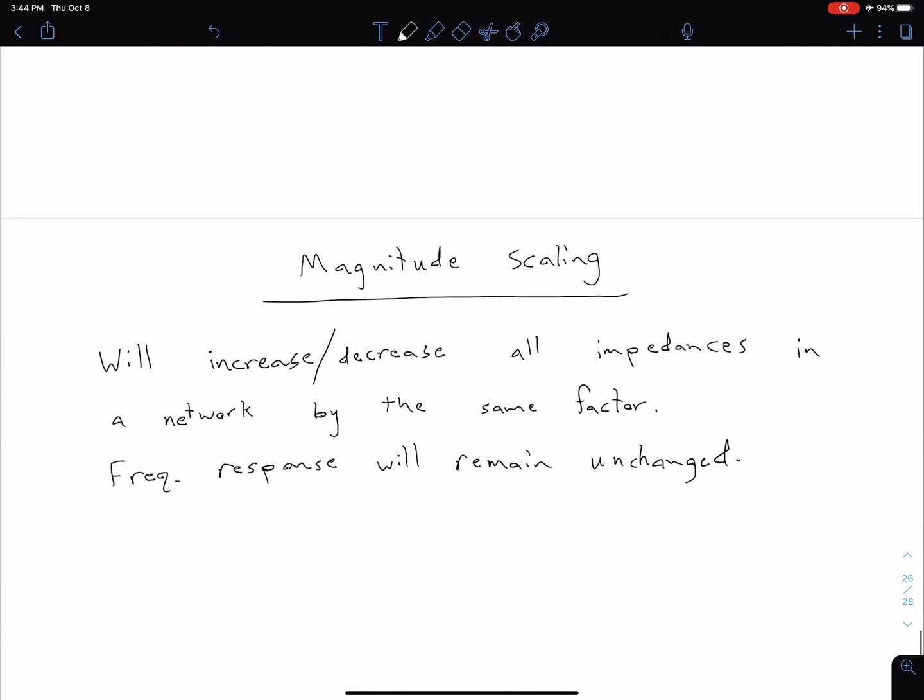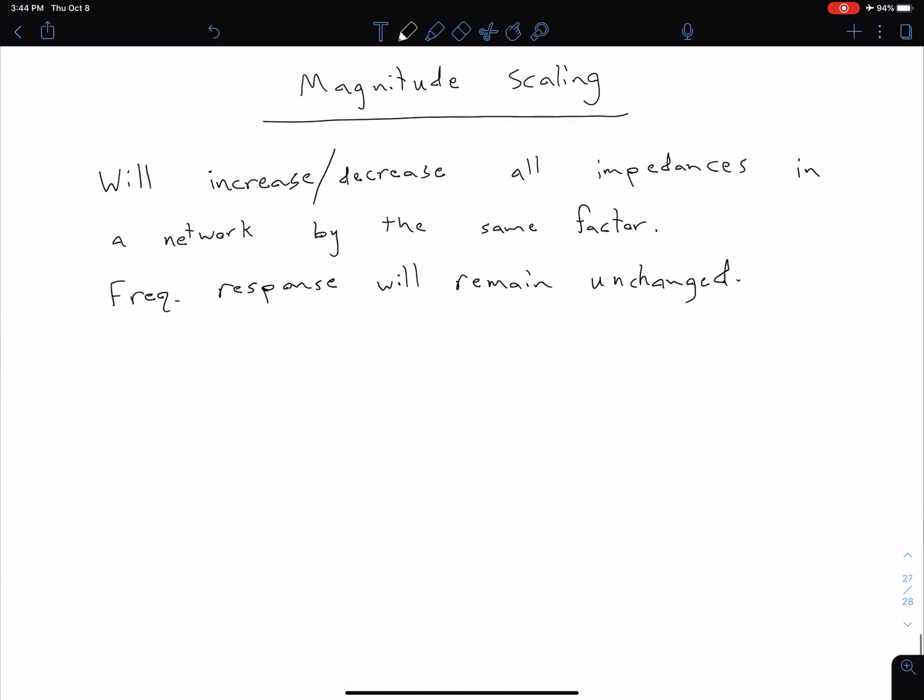Let's start by looking at magnitude scaling. What magnitude scaling does is increase or decrease all the impedances in the network by some factor, which we're going to call Km. But it's going to leave the frequency response unchanged. So we'll have the same bandwidth, same resonant frequency, same quality factor, as we'll show later on.